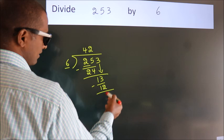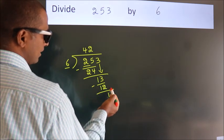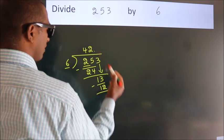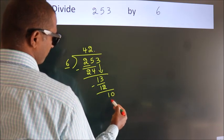After this, no more numbers to bring down. So, what we do is put a dot and take 0. So, 10.